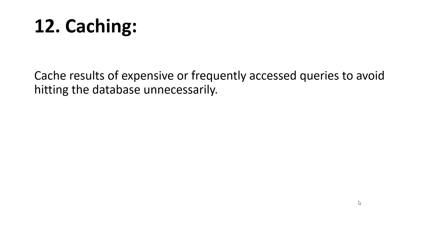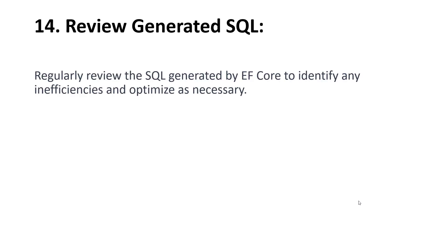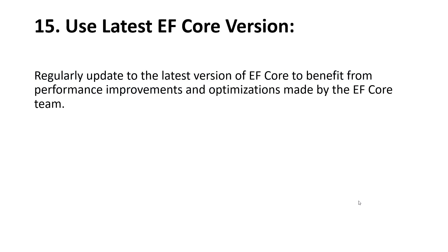The twelfth tip is caching. Cache results for expensive or frequently accessed queries to avoid hitting the database unnecessarily. The thirteenth tip is to avoid the Select N+1 problem by properly using eager, explicit, or lazy loading based on your use case. The fourteenth tip is to regularly review the SQL generated by EF Core to identify any inefficiencies and optimize as necessary.